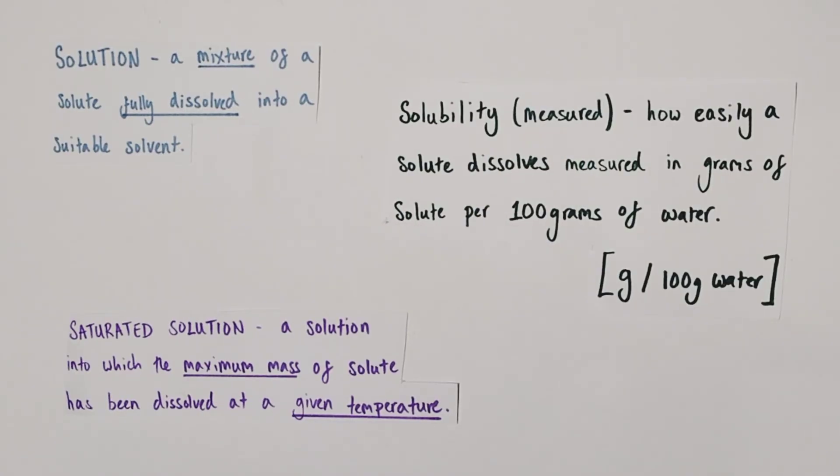The final term we're going to define today is solubility itself. And yes, solubility is how easily a solute dissolves in a particular solvent, but it has to be quantifiable; it has to be quantitative in nature.